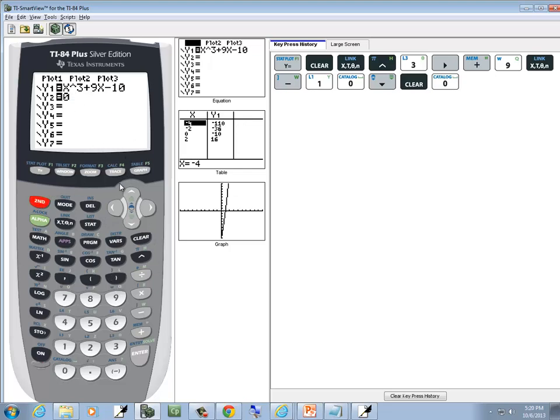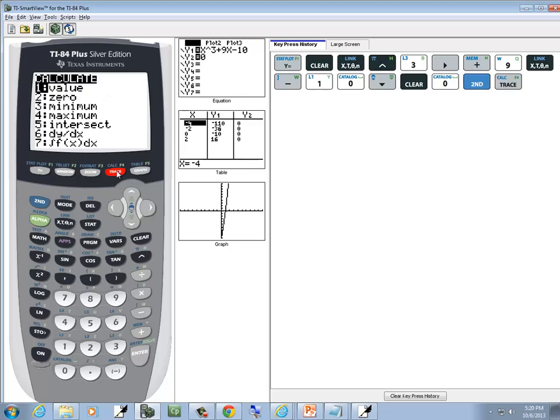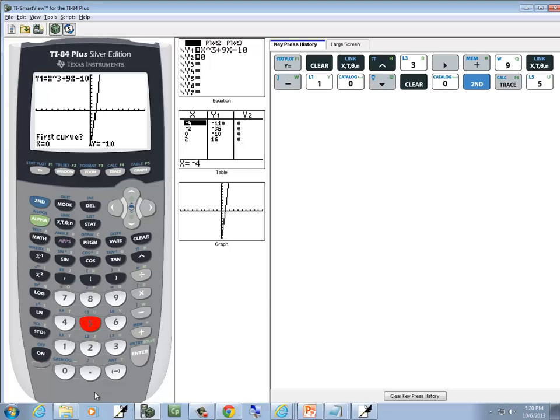Now we're going to do second trace. We'll choose intersect, number 5. And it looks like our answer is 1, but let's go through that just to verify it.